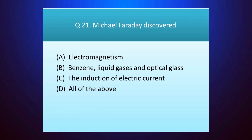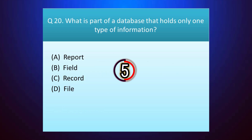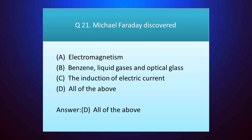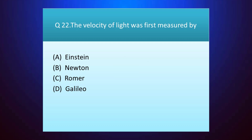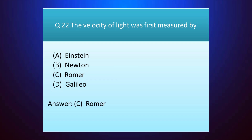Question number twenty-one: Michael Faraday discovered — your time starts. The answer is option D — all of the above. Question number twenty-two: the velocity of light was first measured by — your time starts. The answer is option C — Roemer.